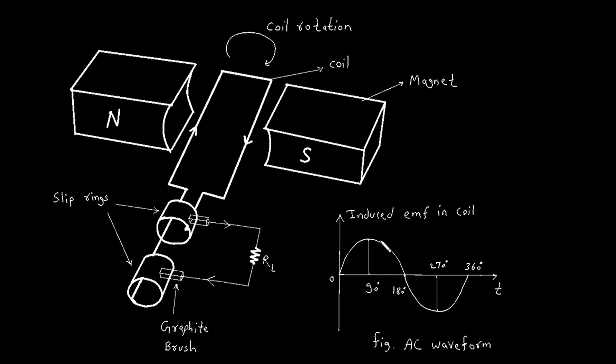The direction of this induced EMF depends on the direction of the rotation of the coil. When the coil rotates in one direction, the EMF induced has a particular polarity. When it rotates in the opposite direction, the EMF has the opposite polarity.